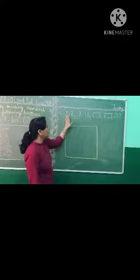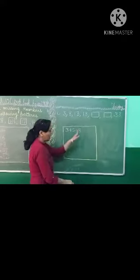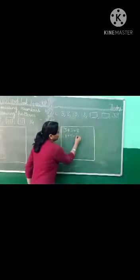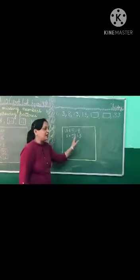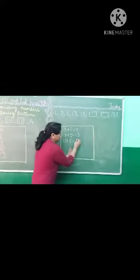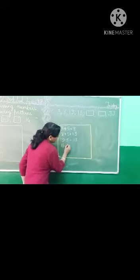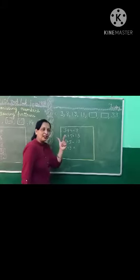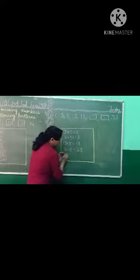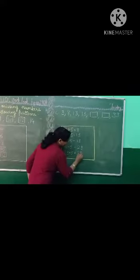So we will add 5 in 3. 3 plus 5 is 8. Now add 5 in 8. 8 plus 5 will be 13. Now add 5 in 13. 13 plus 5, Peter, 13 plus 5 is 18. Now we will add 5 in 18. 18 plus 5 is 19, 20, 21, 22, 23. Now we will add 5 in 23. 23 plus 5, 28.